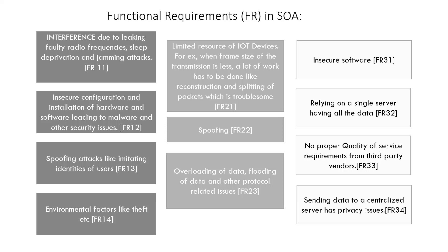Next, we move on to the service layer. Issues here include insecure software, relying on a single server having all the data, no proper quality of service requirement, and sending data to a decentralized server. All of these issues have to be addressed in the SOA architecture, but these are the issues found in the traditional architecture.